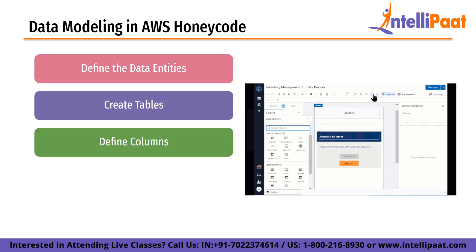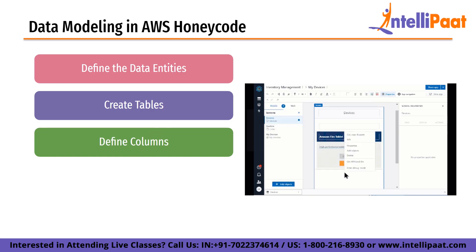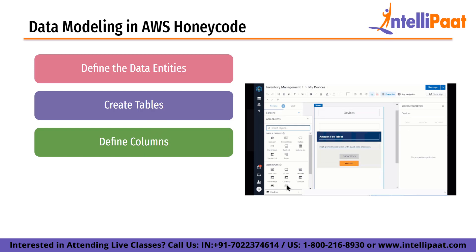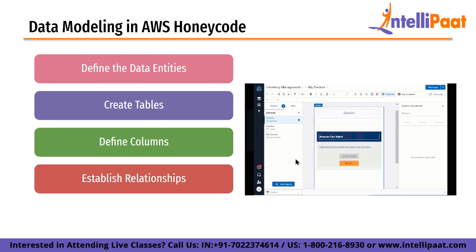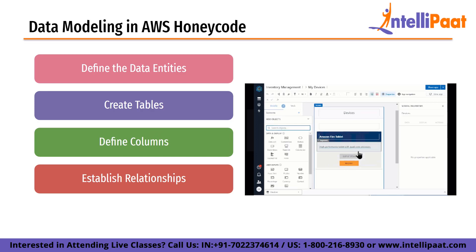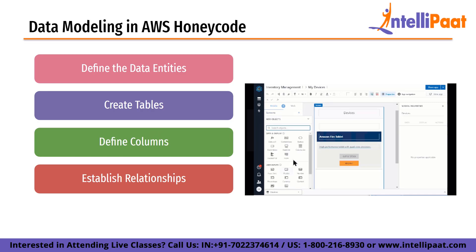The next step is to define columns once the tables are created. Columns are used to store specific types of data, such as text, numbers, or dates. Each column should have a unique name and be defined in terms of its data type and any constraints that apply. Next is establishing relationships. Relationships define how data in one table relates to data in another table. For example, if the app has a customer entity and an order entity, there should be a relationship between the two that links each order to a specific customer.